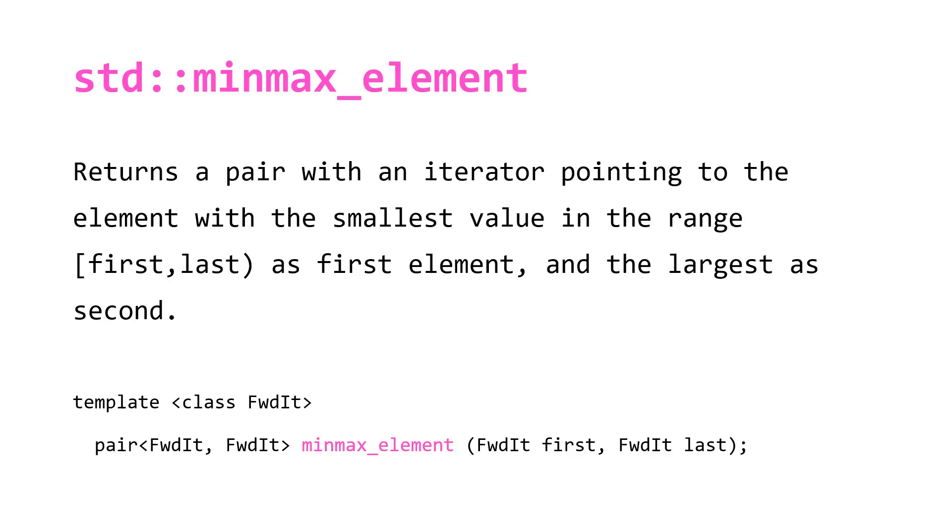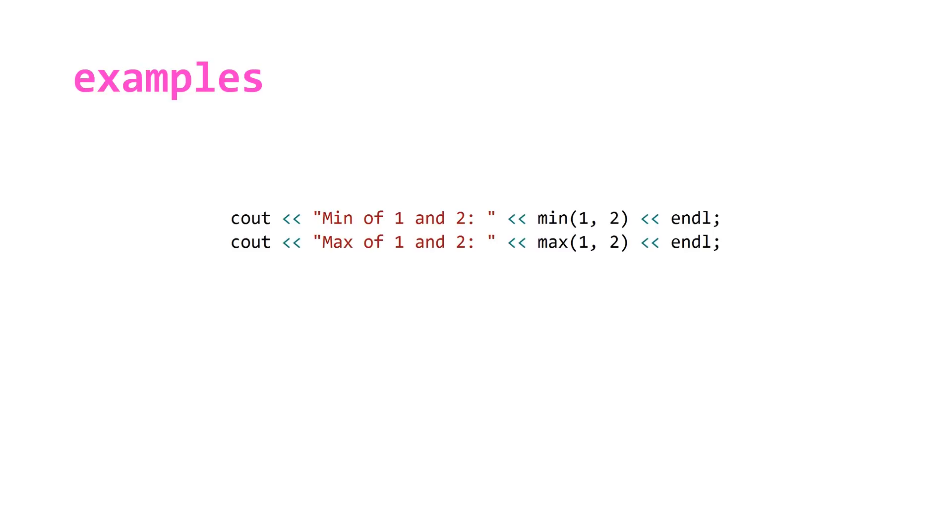So let's take a look at some examples. The first one's pretty trivial. We're just showing that the min and max functions given two values will return the minimum for min and the maximum for max obviously.